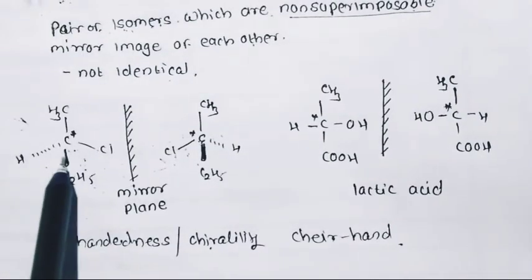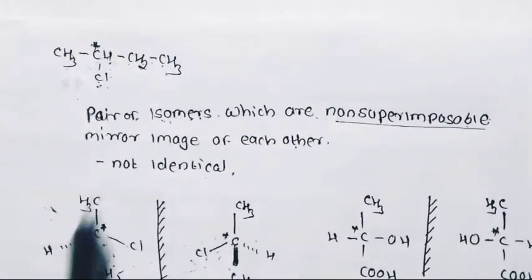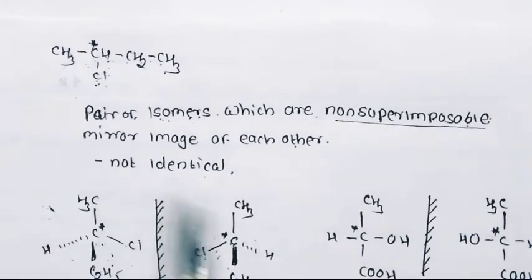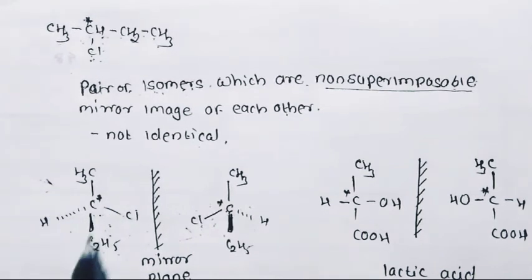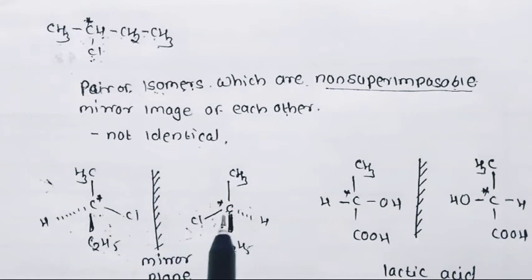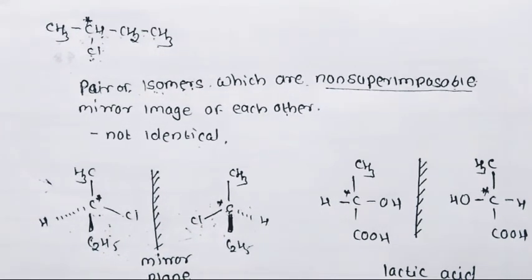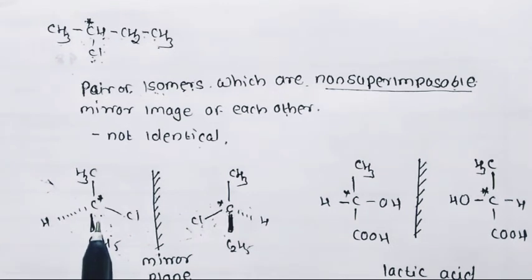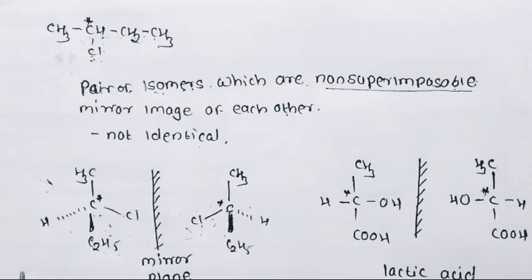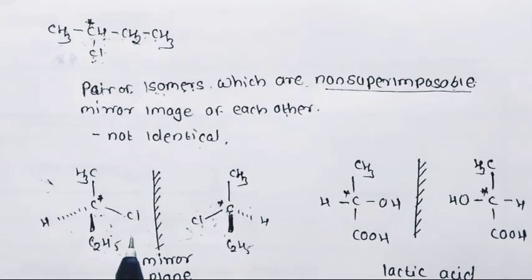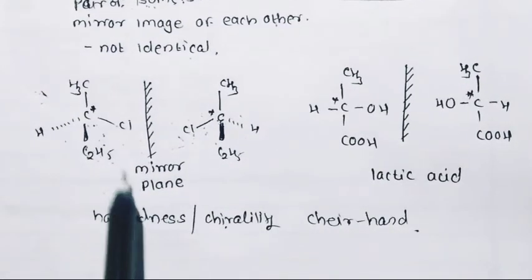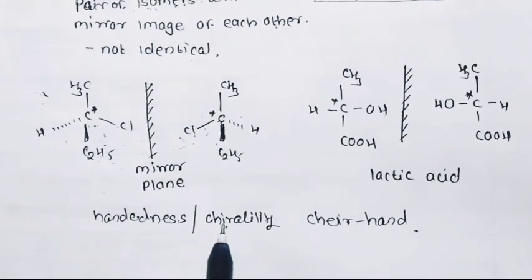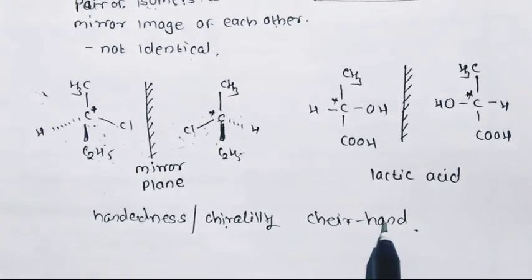A chiral molecule and its mirror image have the same structural formula and the same molecular formula, but the spatial orientation of groups is different — they are stereoisomers of each other. The relationship between a chiral molecule and its mirror image is similar to the left and right hand. This concept is called handedness or chirality. Chirality comes from the Greek word 'cheir' meaning hand.